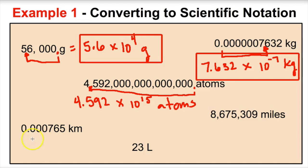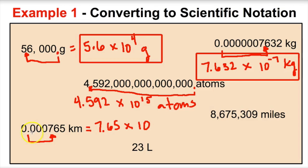Next: moving the decimal between the 7 and the 6 gives 7.65. We had to move the decimal four times, and since this number is less than 1, the exponent is negative. Don't forget your unit — that's your answer.